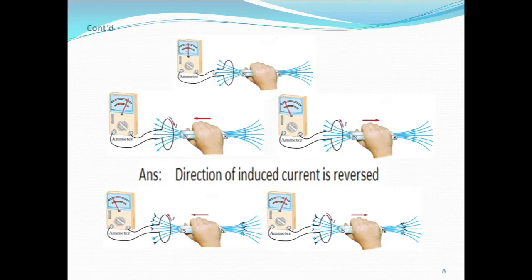When the coil of wire and the magnet are stationary relative to each other, there is no deflection. But as soon as you start moving the magnet, you will find deflection — current flows in a certain direction and the galvanometer needle deflects in that direction. If we change the direction of motion of the magnet, reversing the direction of motion reverses the direction of the induced current.